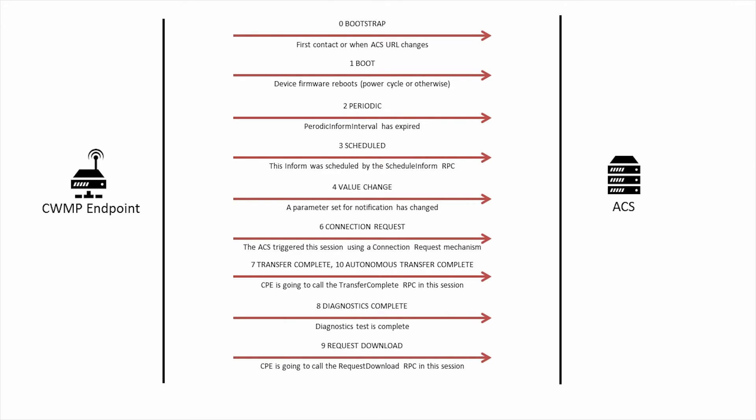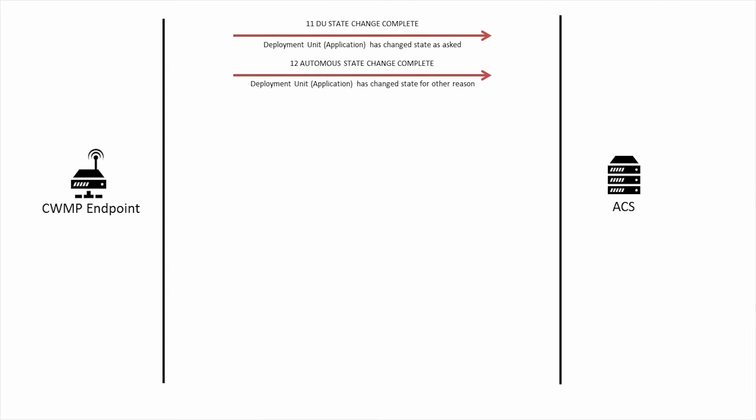The nine request download event occurs when the CPE is establishing a session in which it intends to call the request download RPC on the ACS. The eleven DU state change complete and twelve autonomous DU state change complete events refer to the software module management functions enabled by TR-069 and are triggered when a deployment unit — the technical term for an application on the CPE — changes its state, for instance from installed to uninstalled. The thirteen wake up event is triggered when a device that has a low power or sleep mode of operation comes back online. In addition to these events are events labeled with M for method. These events occur in tandem with other TR-069 events to state explicitly that a TR-069 RPC was the cause of the event.